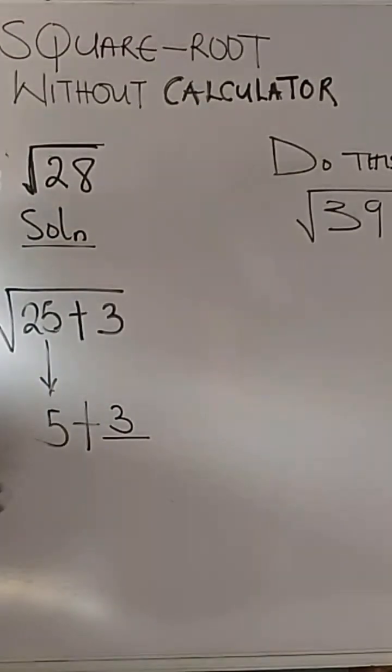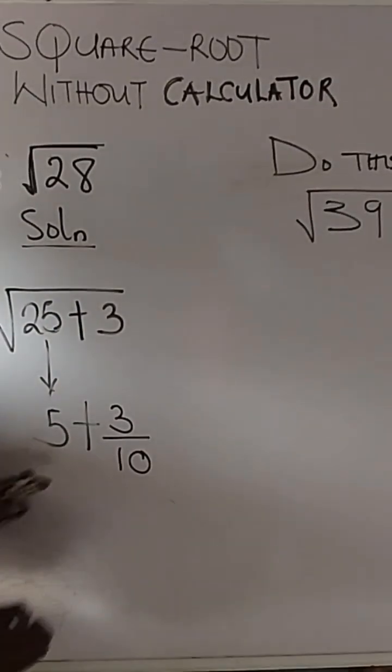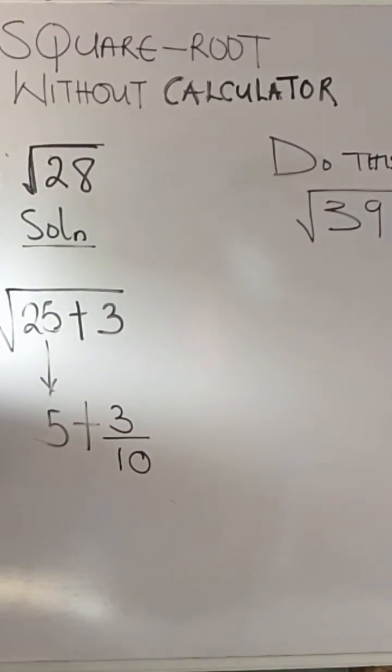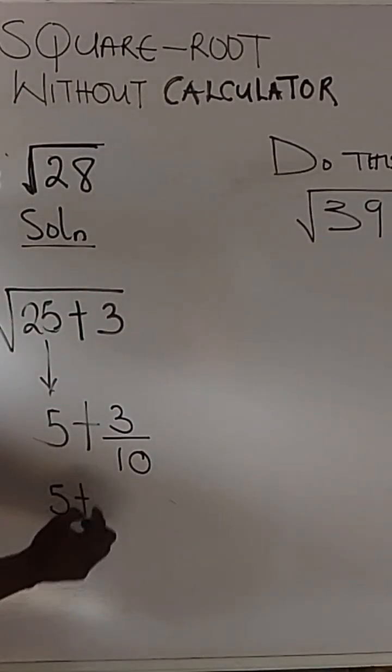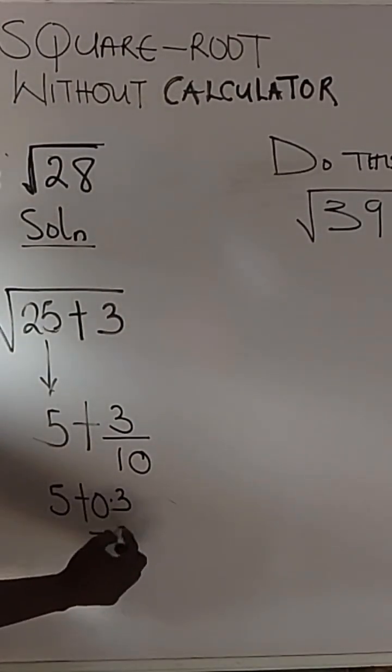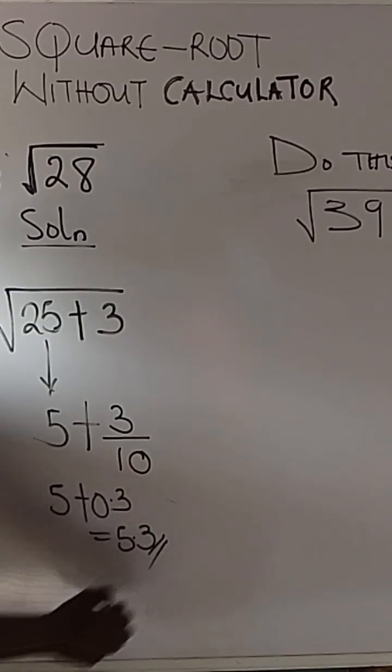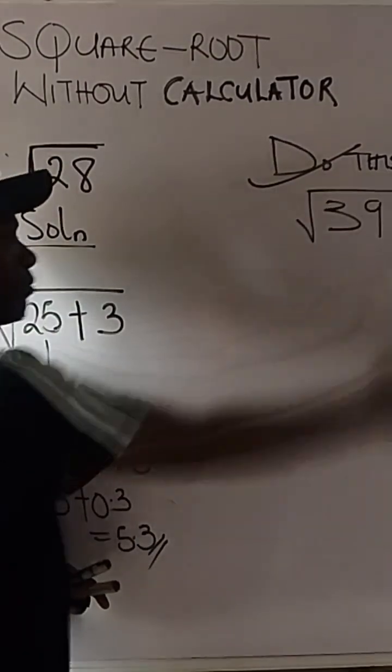So 3 over 10 will give us 0.3, so that will give us 5 plus 0.3. The answer is 5.3.